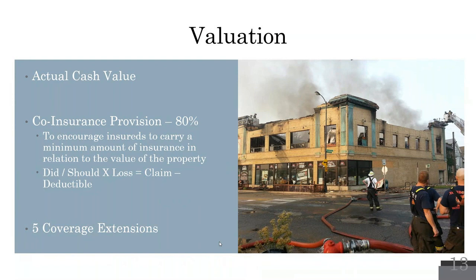For commercial property, actual cash value applies to the building, actual cash value for your contents, and actual cash value for other people's property under your care. Most companies require you to carry a reasonable amount of coverage relative to the building's value — this is called coinsurance. For the test, they typically use 80%, though it can range from 70% to 100% in the real world. You must understand the rationale of coinsurance.